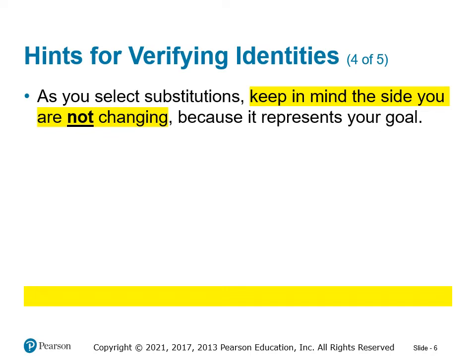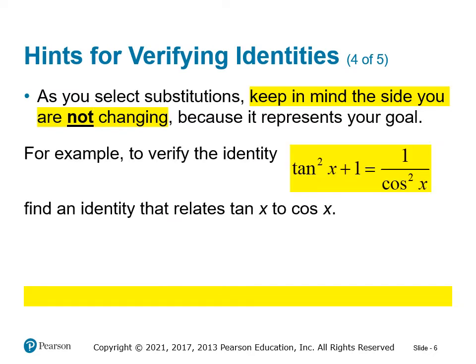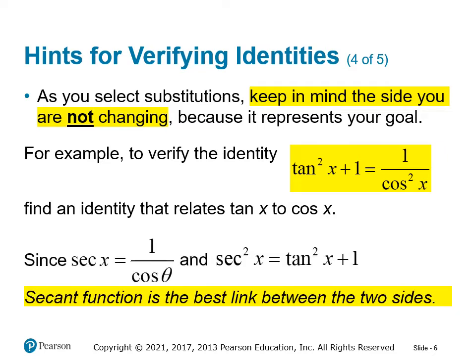As you select substitutions, keep in mind the side you're not working on, because that represents your goal — what you're trying to get to. For example, if we're working on the left side of tangent squared x plus one equals one over cosine squared x, we've got to remember we're trying to get to cosine. So we're looking for an identity relating tangent and cosine. Since secant equals one over cosine and there's a Pythagorean identity secant squared equals tangent squared plus one, secant would likely be the best link between these two sides.